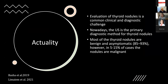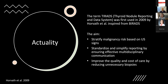Thyroid nodules are very common in the general population, and with increasing imaging techniques, more are accidentally detected. Only a small part is malignant, but evaluation is a common clinical challenge. Ultrasound is the primary diagnostic method, detecting more than 70 percent of nodules compared to palpation. Fine needle aspiration is the primary method for thyroid cancer diagnosis, but not all nodules need biopsy — 85–93 percent are benign, while 5–15 percent are malignant.